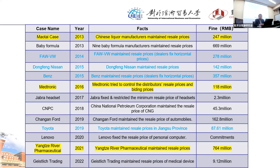There are divergences in the application of RPM regulation because some enforcement agencies prefer rule of reason analysis while local branches may prefer the illegal per se approach, and courts may favor rule of reason. This divergence cannot be resolved soon — we will see how enforcement agencies and courts interact in the future.